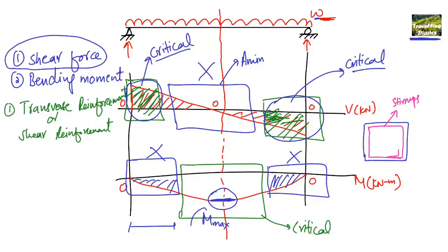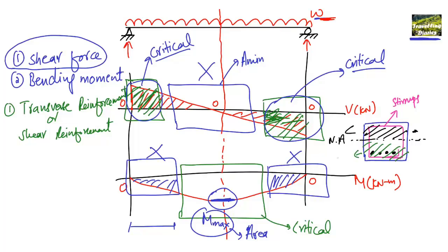We have to design the area of reinforcement according to the maximum bending moment. In the beam cross-section, the bending reinforcement is provided in the extreme tension zone at the bottom, because we always have tension in the bottom zone. The compression zone is above the neutral axis.